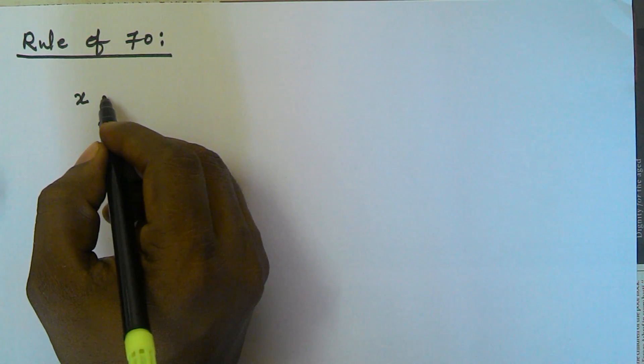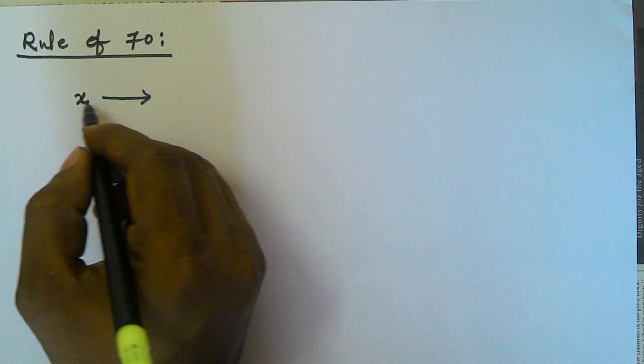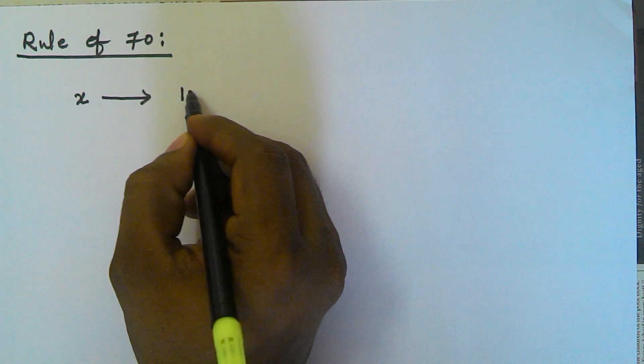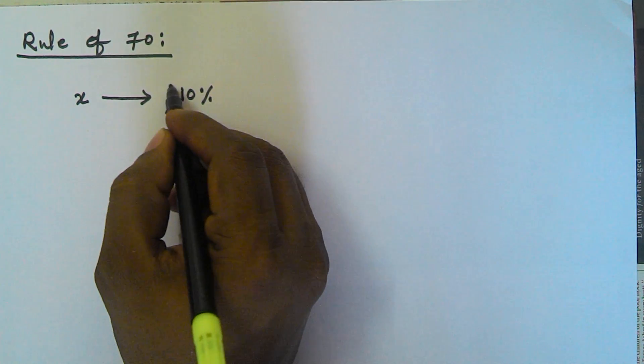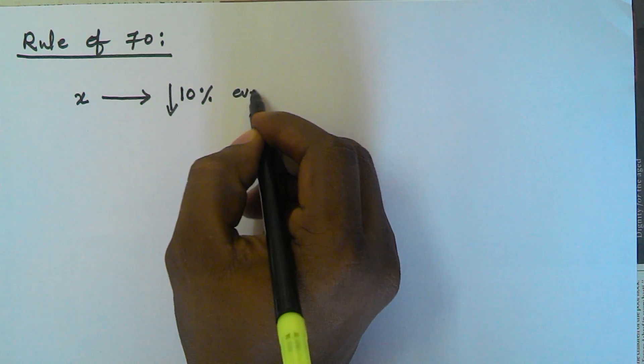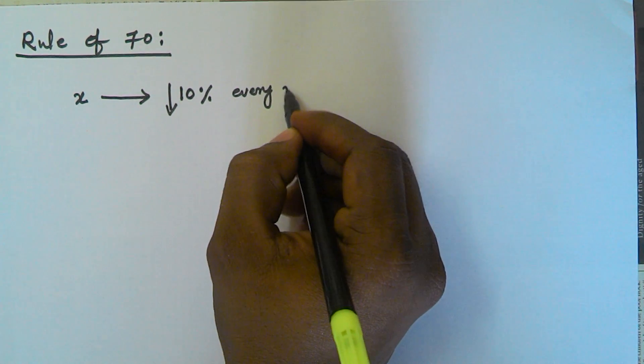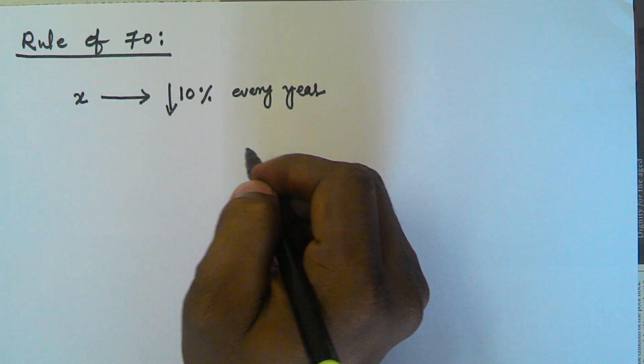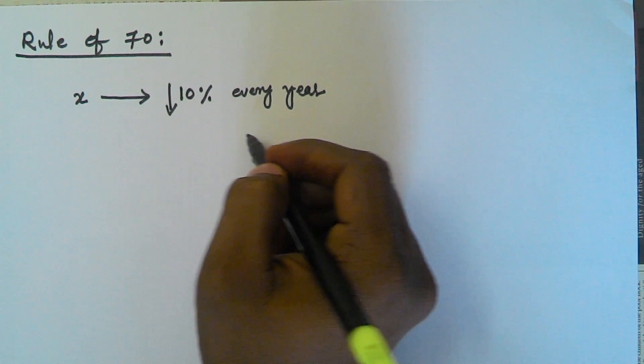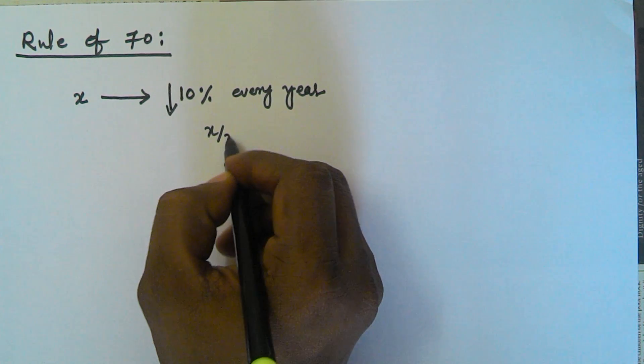The Rule of 70 is used to find after how many years the efficiency of a machine is reduced to 50%. For example, the machine's efficiency is currently x and its efficiency is reduced by 10% every year. After how many years will the machine's efficiency become x divided by 2?